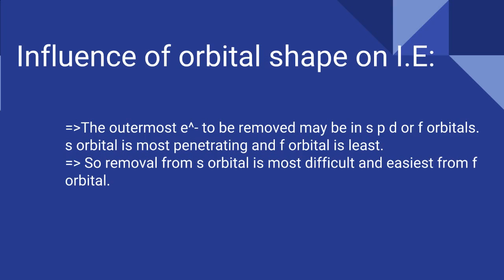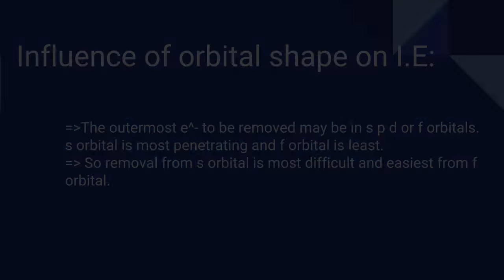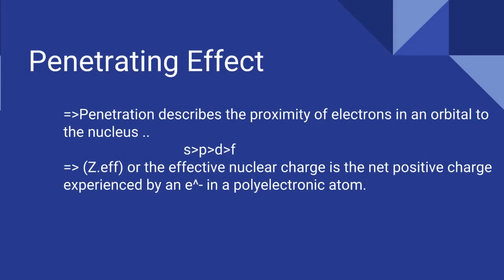Let's see what the penetration effect is. Penetration describes the proximity of electrons in an orbital to the nucleus — how near the electrons are present to the nucleus. The general trend of the orbitals is: S has the most penetration, P lesser than S, D even lesser, and F the least.